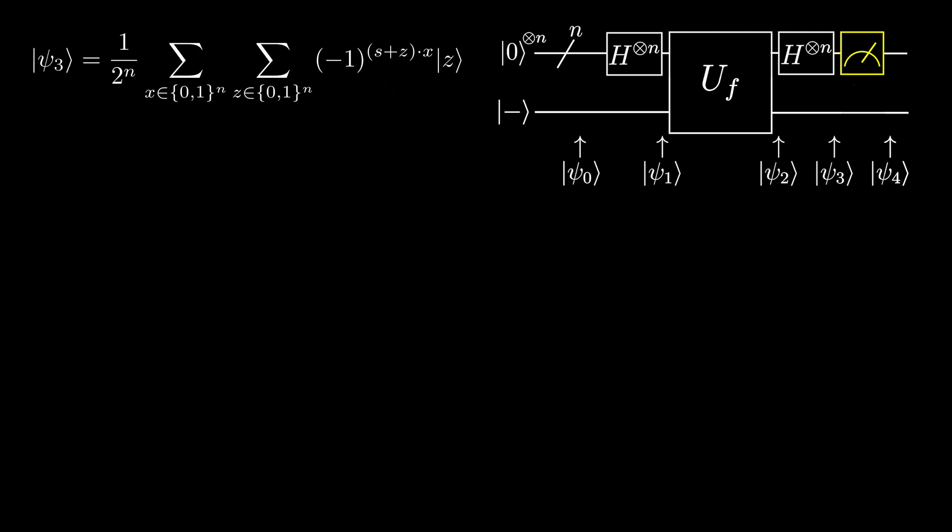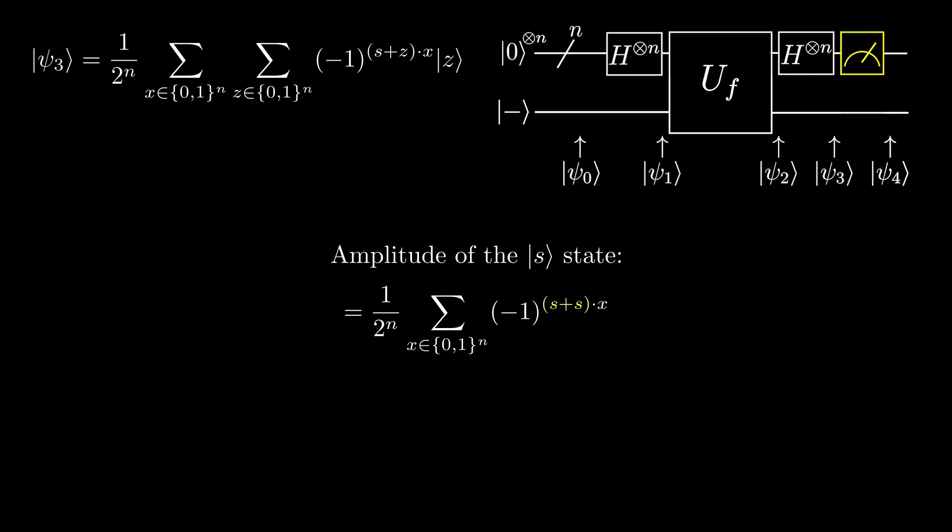Expanding out, we find the amplitude of the s state is 1 over 2 to the power of n times the sum over all x's, where x is a bit string of length n, negative 1 to the power of s plus s dotted with x. Since plus indicates bitwise exclusive or, s plus s equals all zeros.